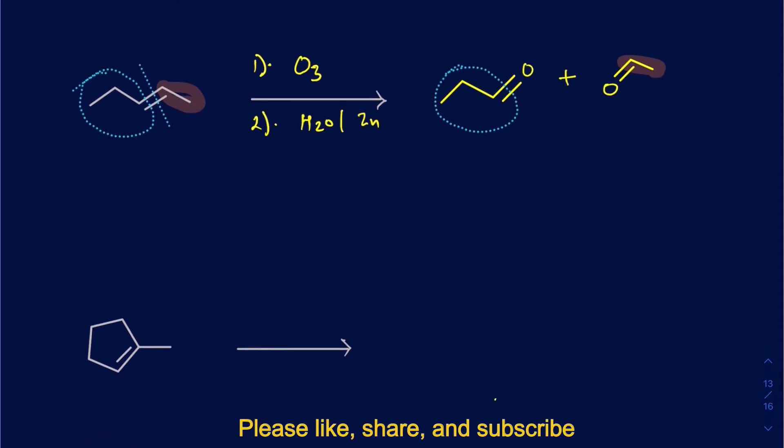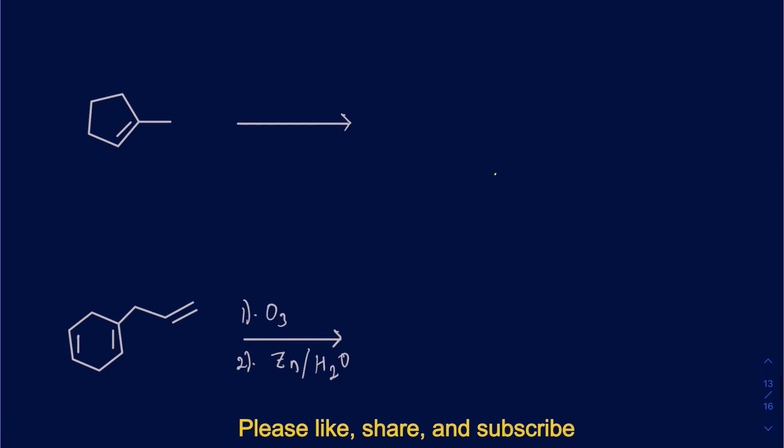This question gets a little bit complicated or confusing when you have these rings being involved and you're doing this same type of reaction. Sometimes it's a good idea to keep track of your carbons by numbering them. Suppose I'm still using O3 with zinc water. In this case, there is a double bond, but it's in the ring. Even when you open that double bond up, it's still going to be one molecule.